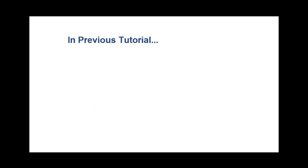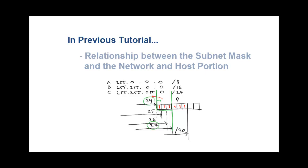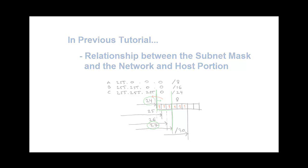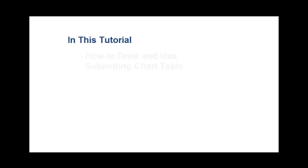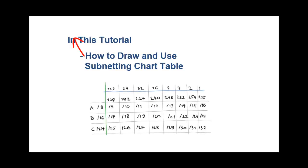The first introductory video explained briefly how to increase the network portion by changing the subnet mask — in other words, the relationship between the subnet mask and the network and host portions. This video shows you how to draw a new subnetting chart table. It's easy to do. Just follow me and soon you'll become a subnetting master.